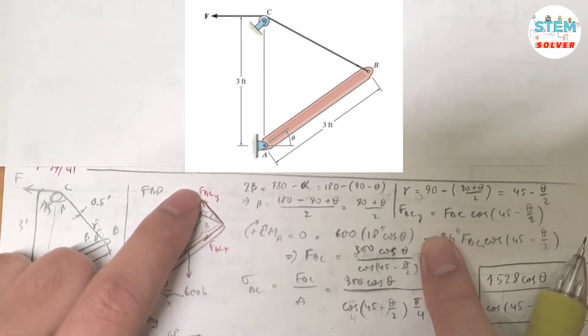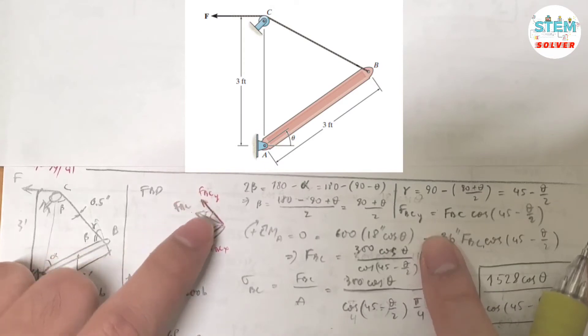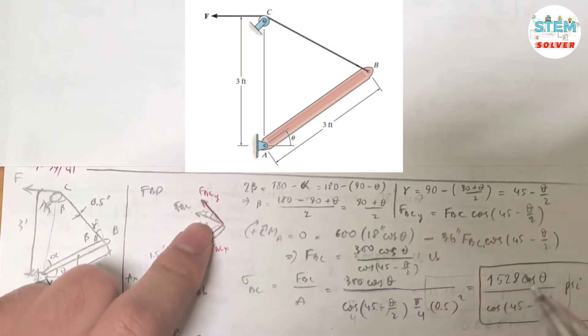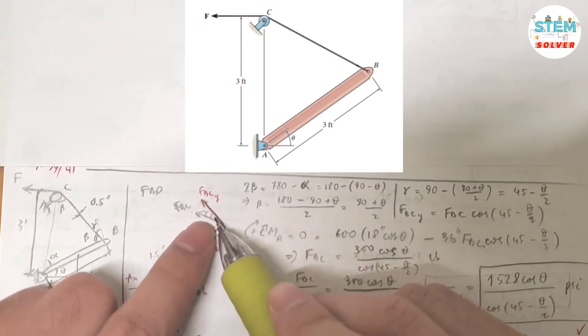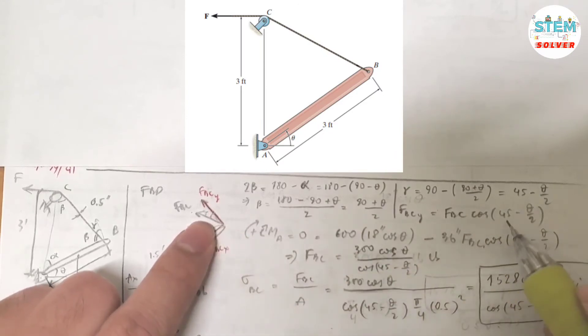Now, the force FBCY is equal to FBC times cosine of gamma, which is 45 minus theta over 2. Keep in mind this.